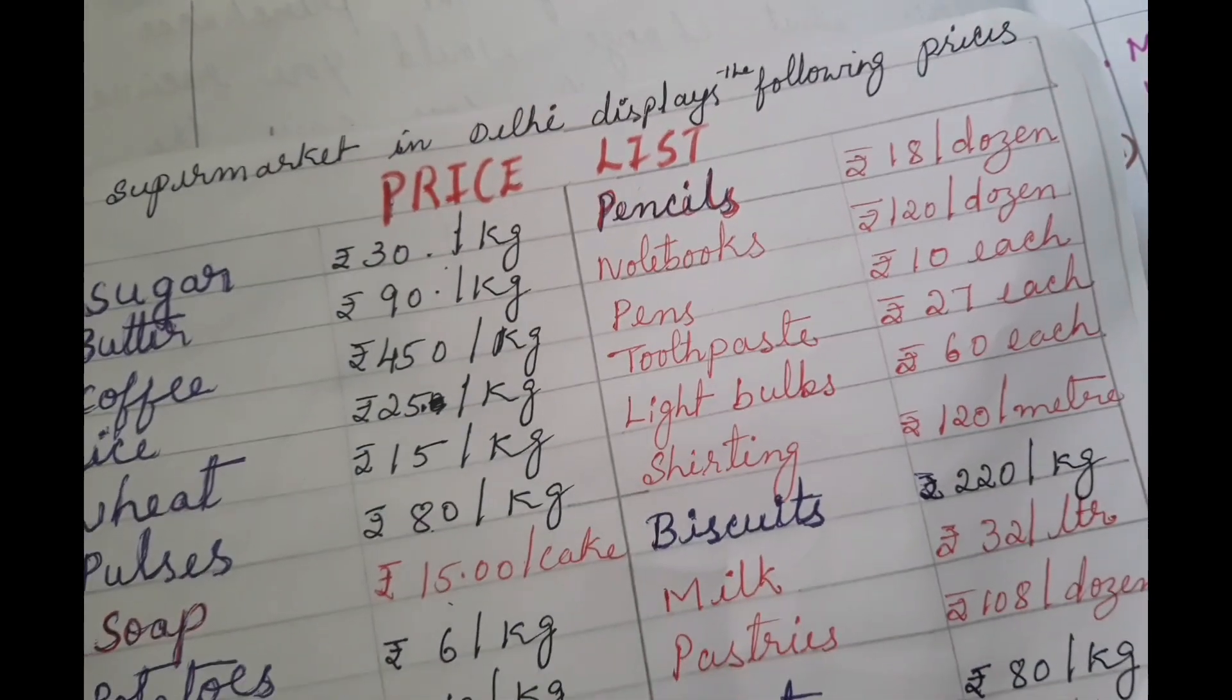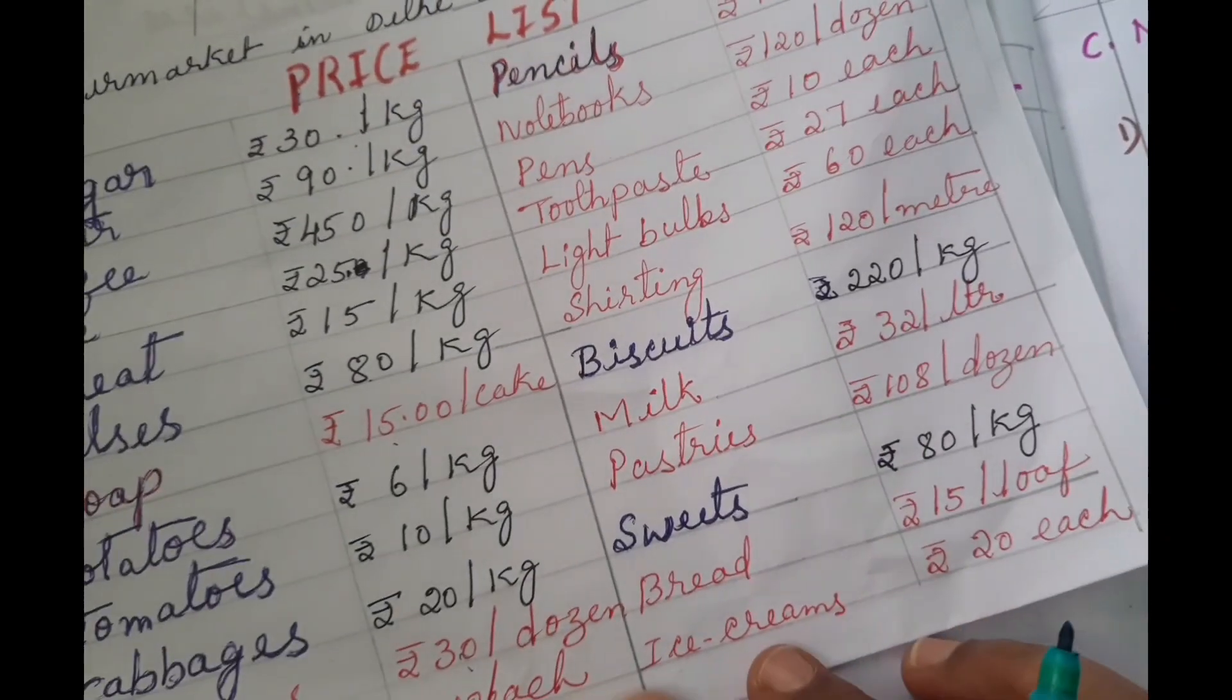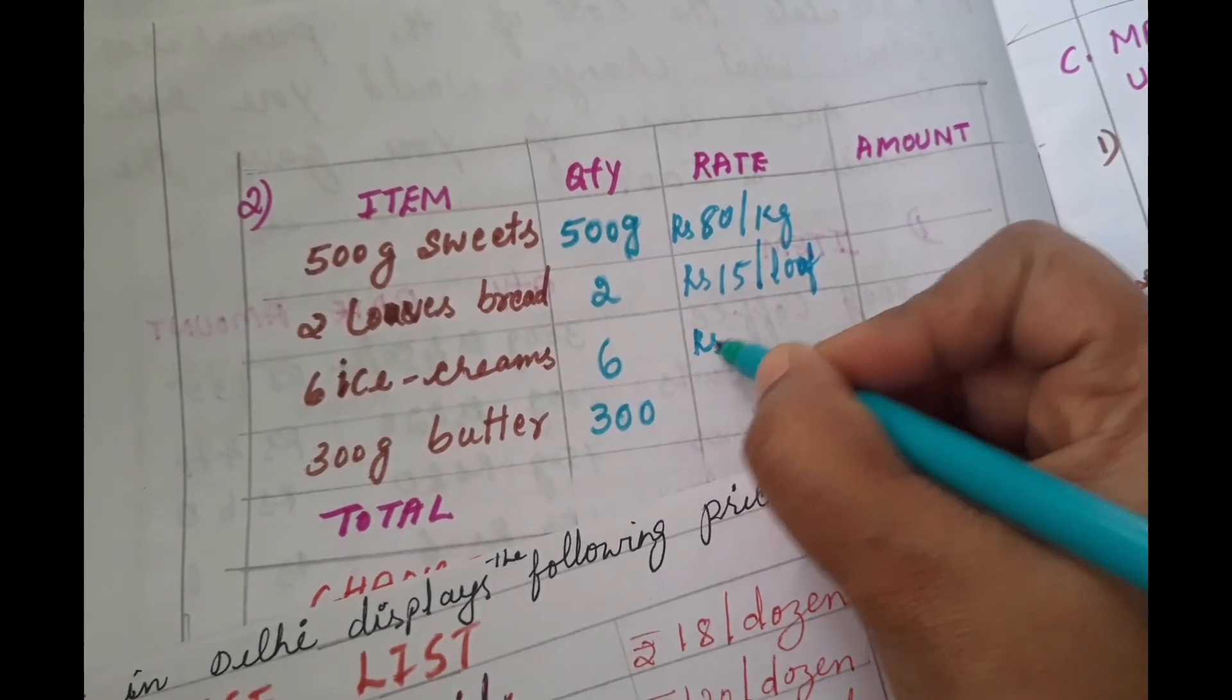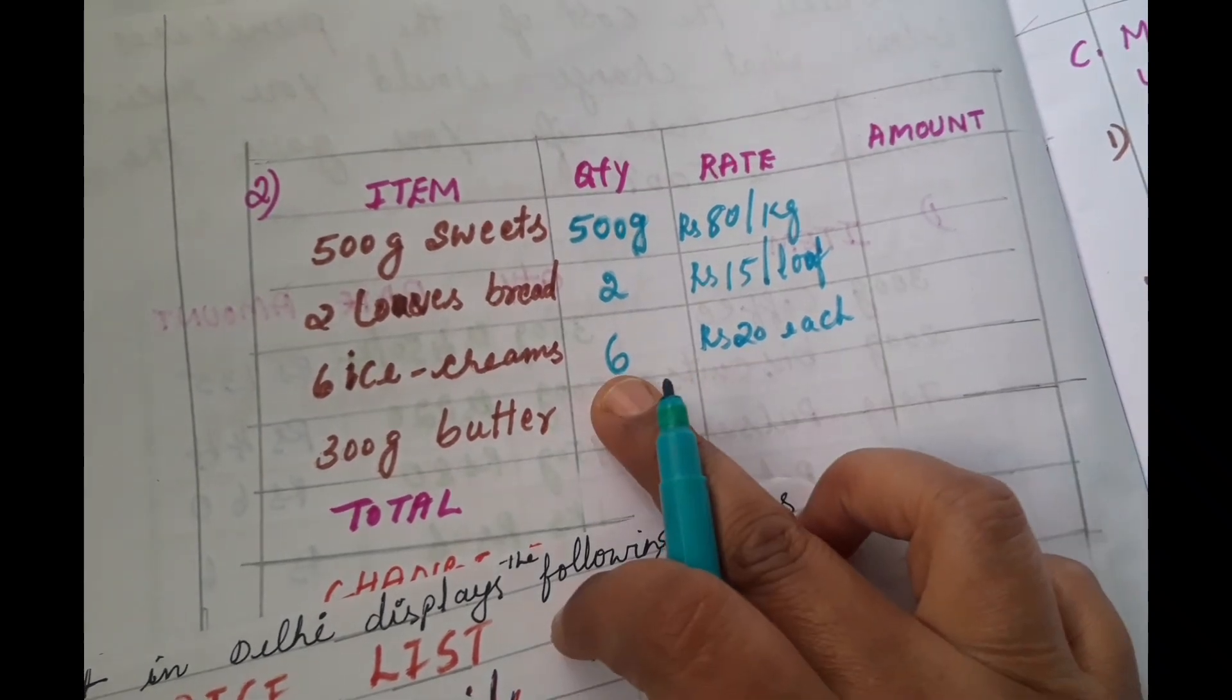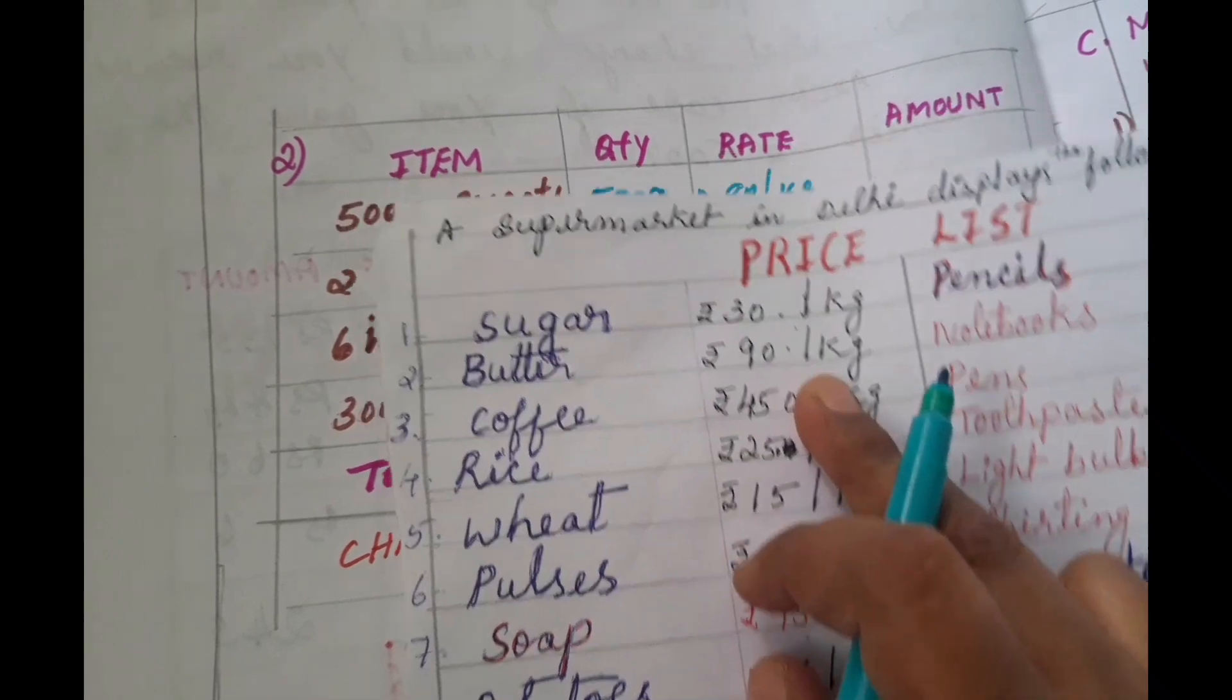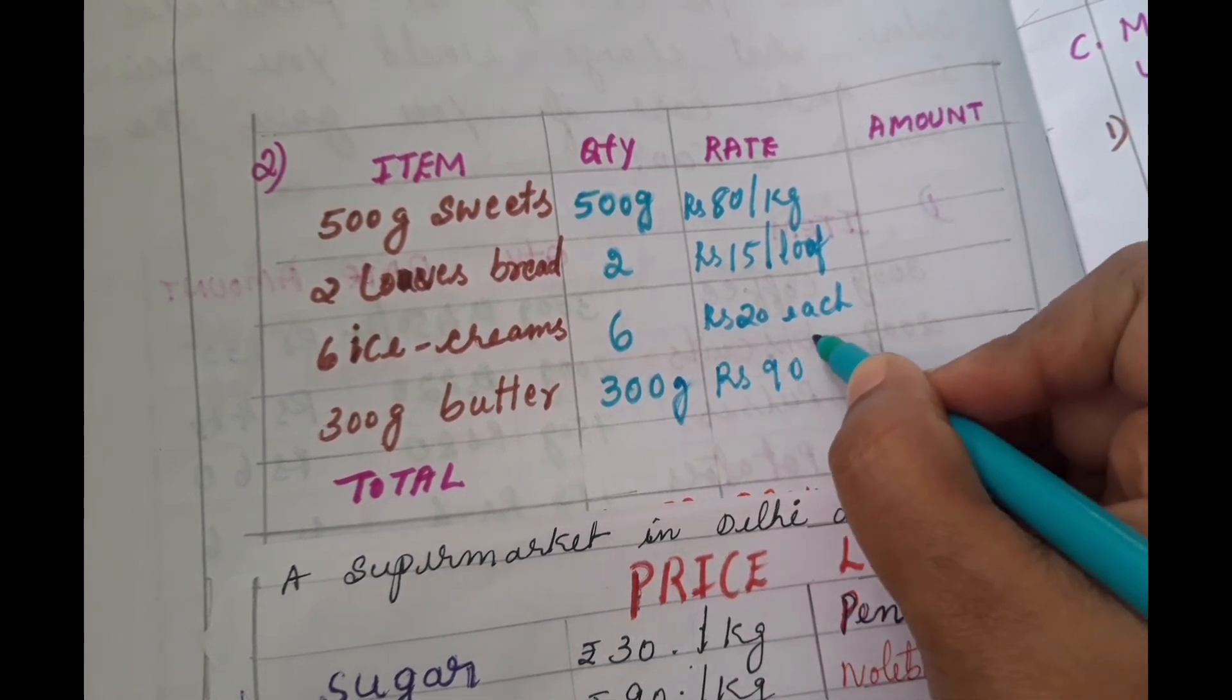Then next is 6 ice cream. Ice cream is rupees 20 each. One ice cream is 20 rupees, so here we write rupees 20 each. Now 300 grams of butter, rupees 90 per kg.